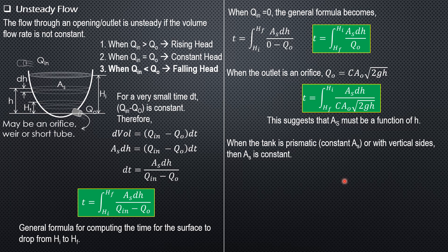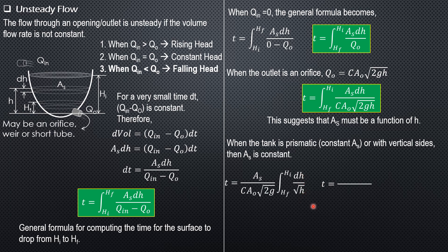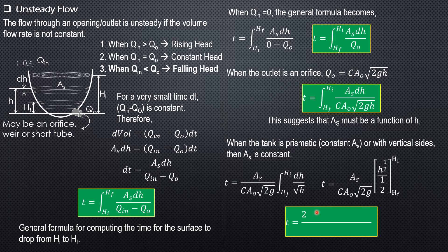With constant area S, we can place S before the integral sign along with C, area O, and the square root of 2G — abbreviated as 'kautog' for convenience. So we have area S over (C · A_o · sqrt(2G)) times the integral of dH over sqrt(H), which is H to the negative one-half dH. This evaluates to area S over kautog times H to the positive one-half over one-half, from H_f to H_i.